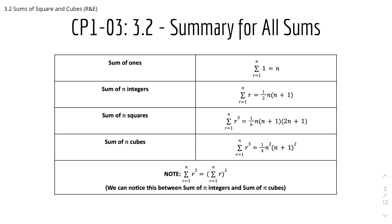Here we have a summary of all the sums we've encountered in series. The sum of 1's from r equals 1 to n equals n. The sum of n integers: sum of r from r equals 1 to n equals half n(n+1). The sum of squares: sum of r squared equals one-sixth n(n+1)(2n+1). And the sum of cubes: sum of r cubed equals one-quarter n squared (n+1) squared.